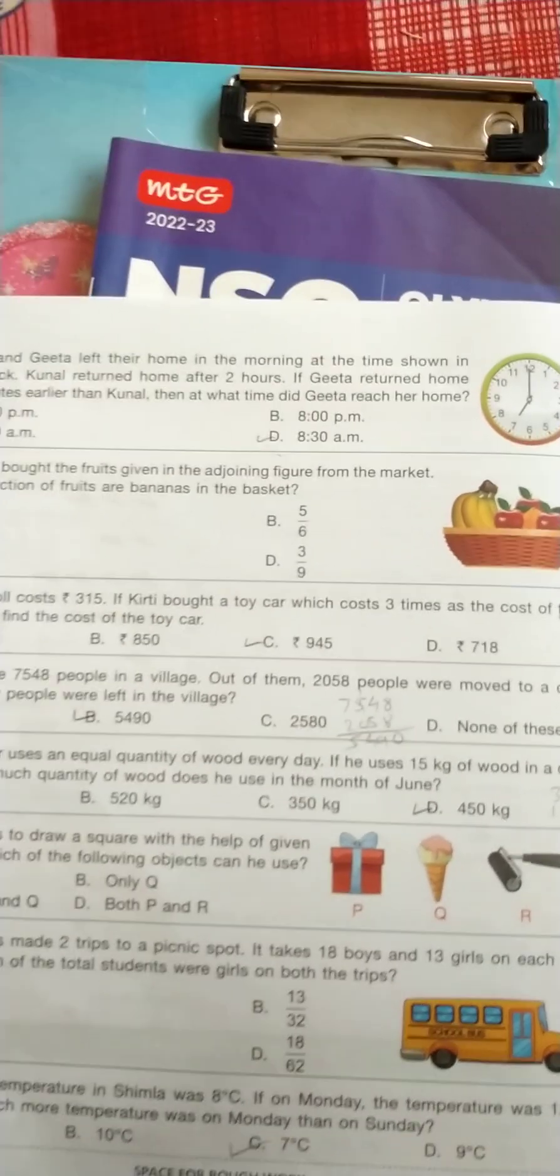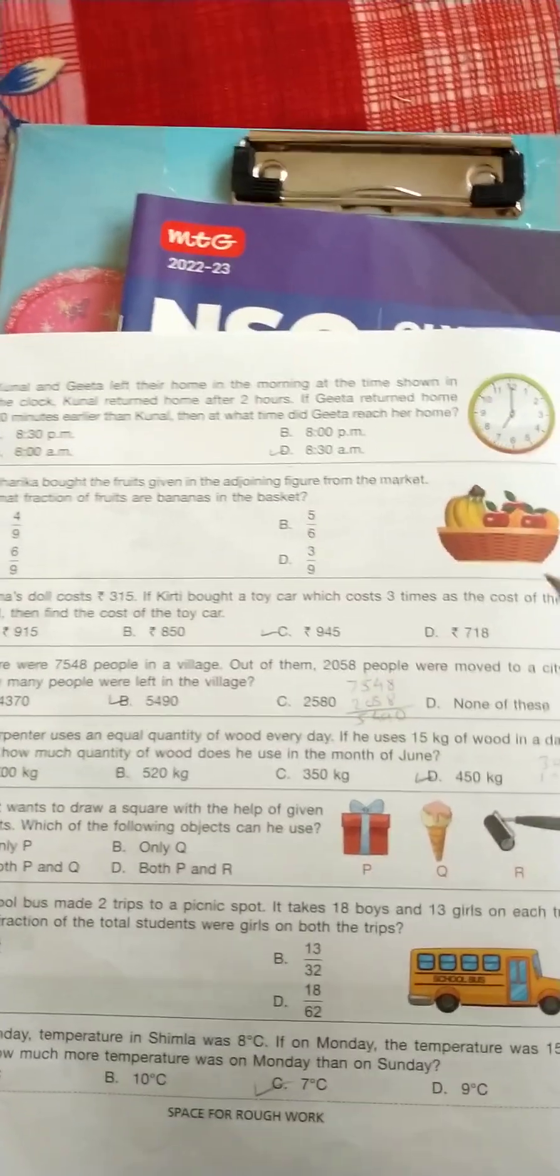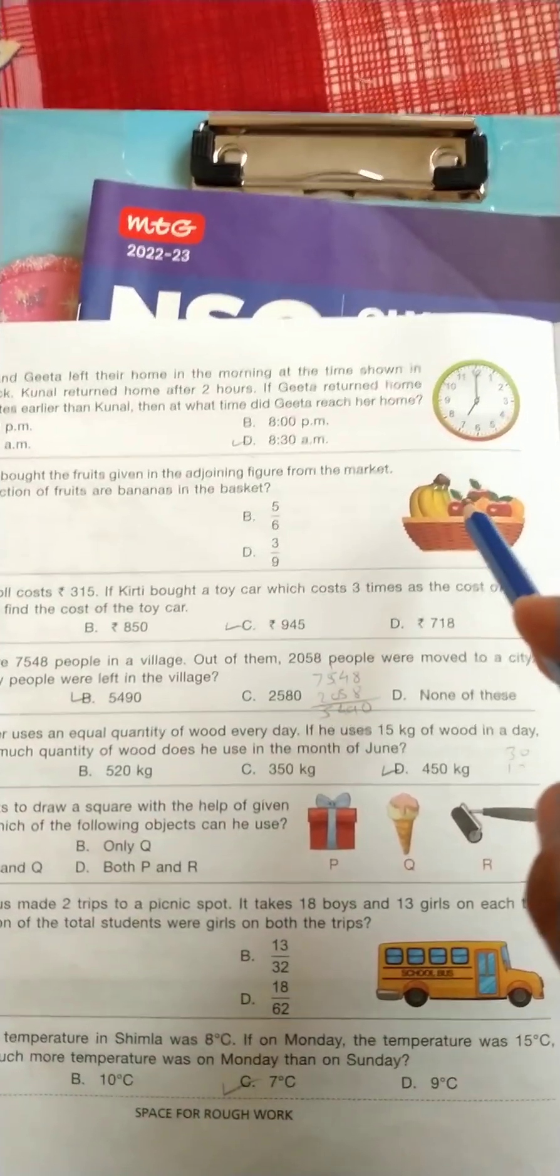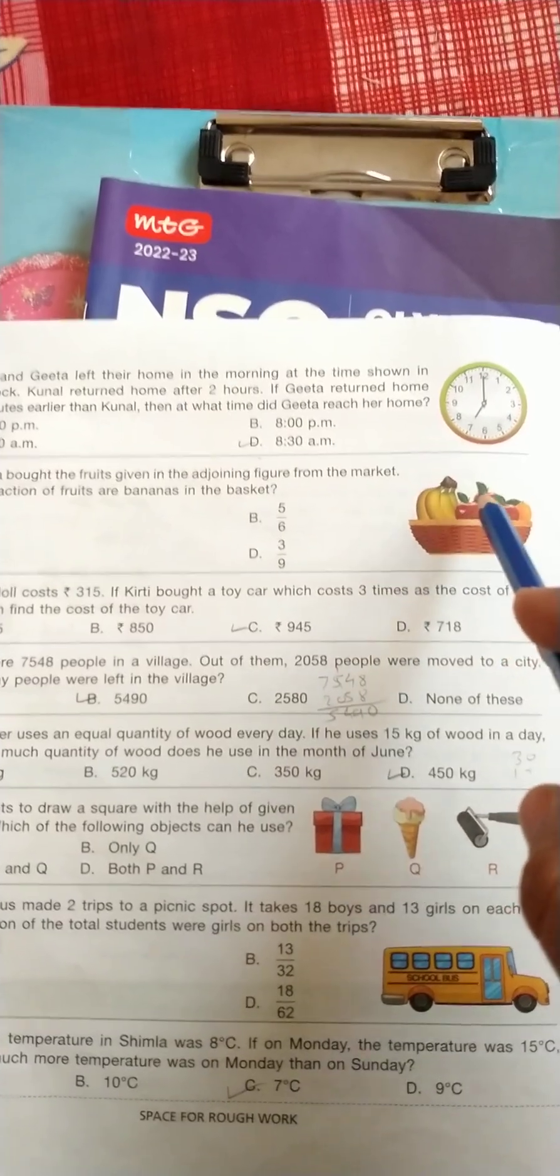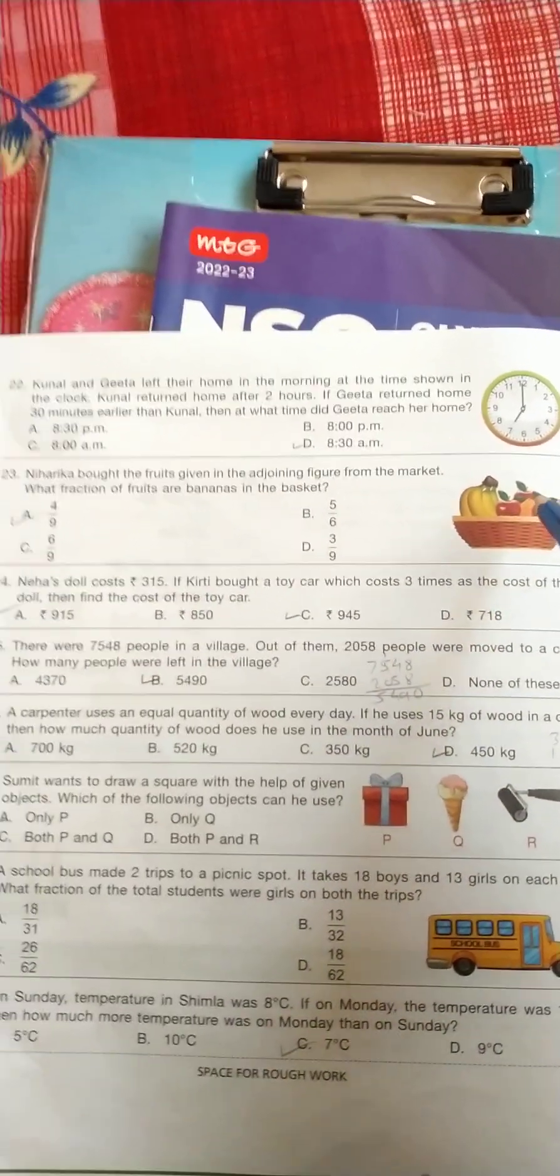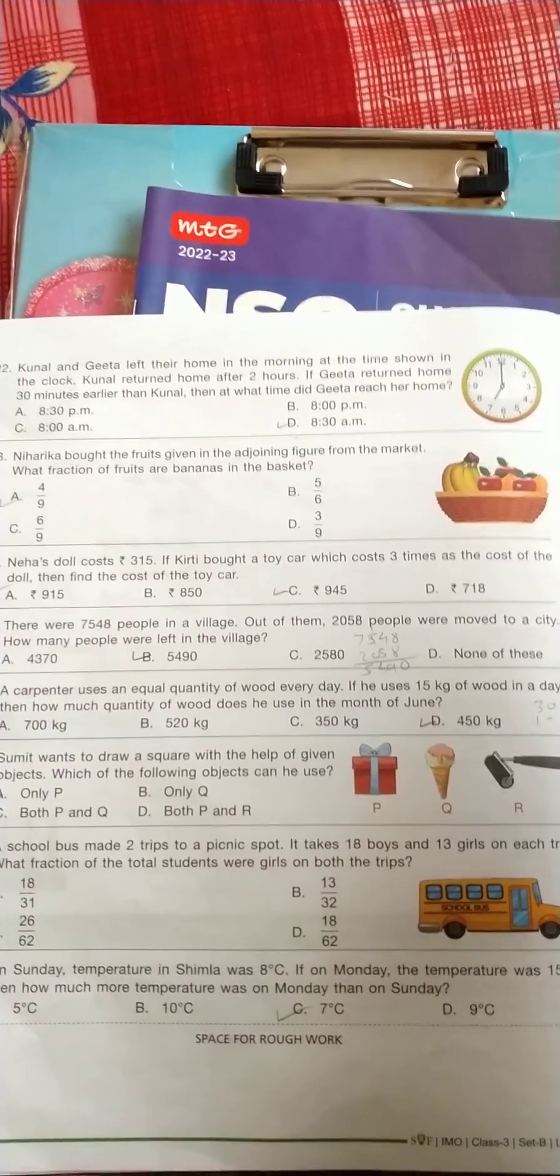So count banana, 1, 2, 3, 4 - 4 bananas. And total fruits are 4 bananas plus 5, 6, 7, 8, 9, total fruits are 9. So the fraction is A, 4 upon 9.